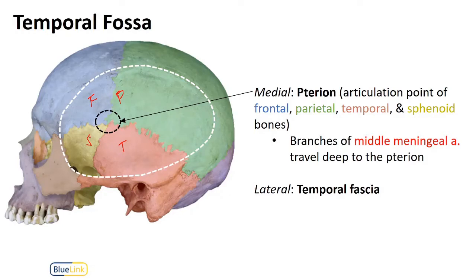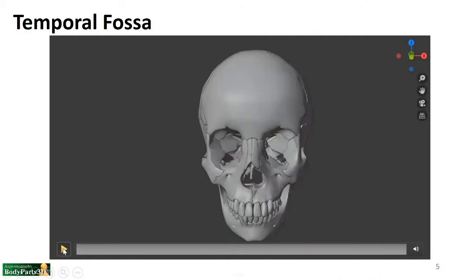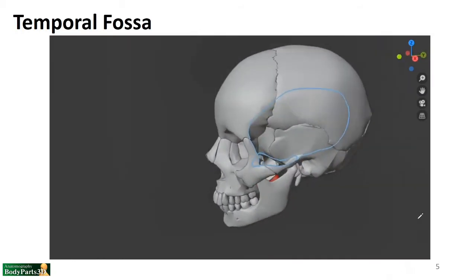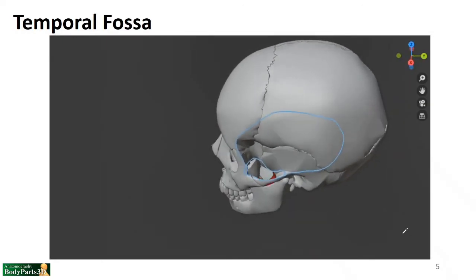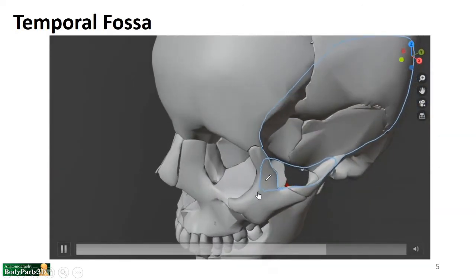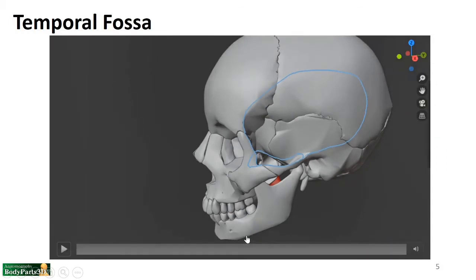The most lateral aspect — toward the viewer — is the temporal fascia, which runs superficial to the temporalis muscle. Looking at this in somewhat of a 3D view with annotations: from the superior and inferior temporal lines down to the zygomatic arch and the infratemporal crest, that space containing the temporalis muscle, its blood supply, and other neurovasculature is the temporal fossa.